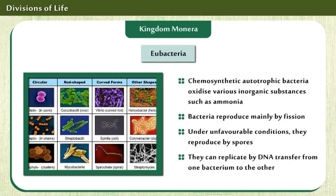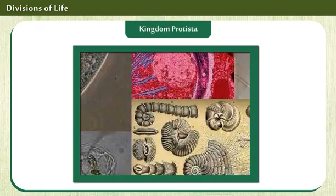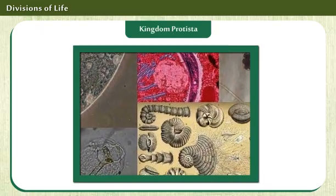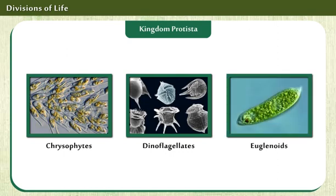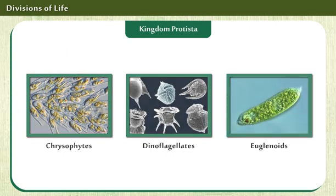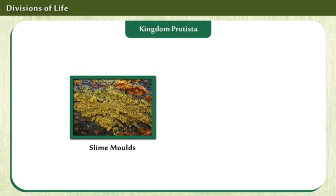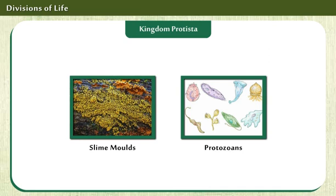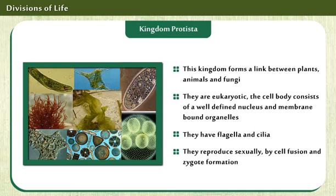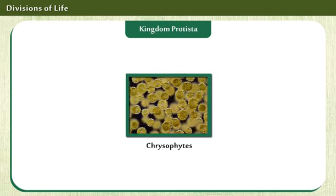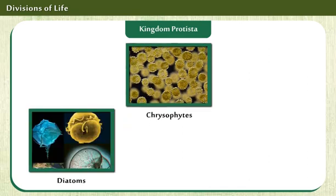Kingdom Protista includes chrysophytes, dinoflagellates, euglenoids, slime molds, and protozoans. Some of their features are displayed on the screen. Chrysophytes are classified under Kingdom Protista and include diatoms and desmids.